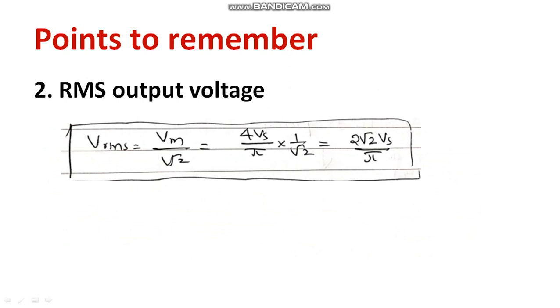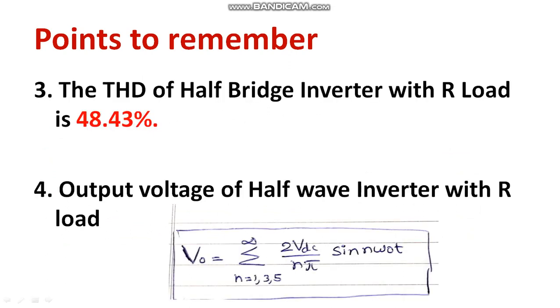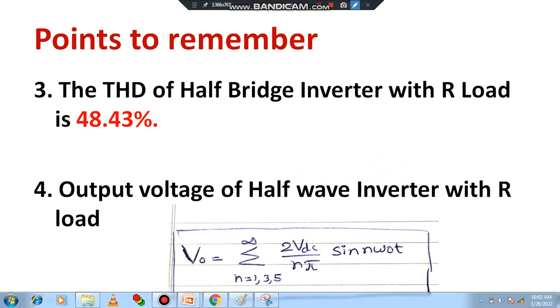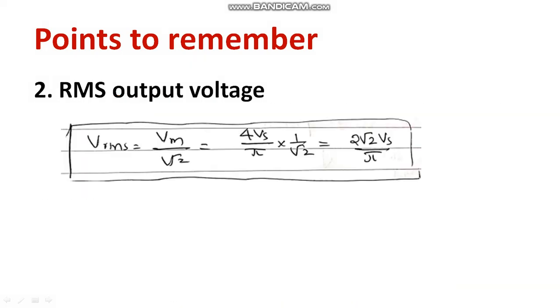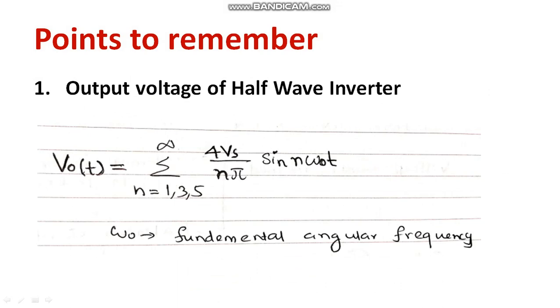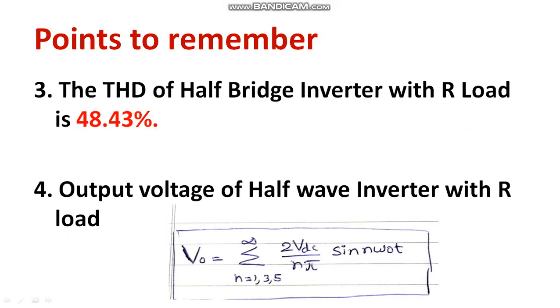You will get 2√2 Vs / π for the fundamental. One very important point for competitive exams: the total harmonic distortion (THD) of the half bridge inverter is 48.43%. You must remember that immediately. The output voltage of the half bridge inverter with R load can also be written as (2Vdc / nπ) × sin(nω₀t), which is the standard equation.